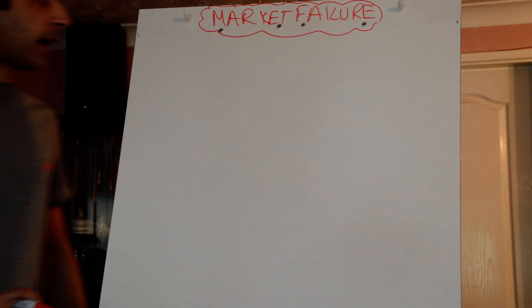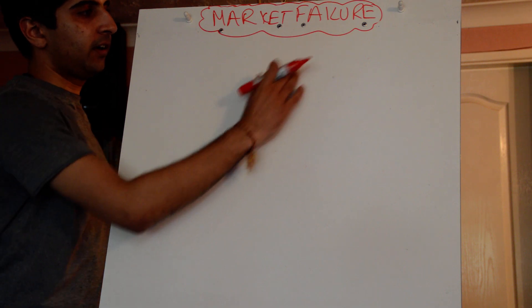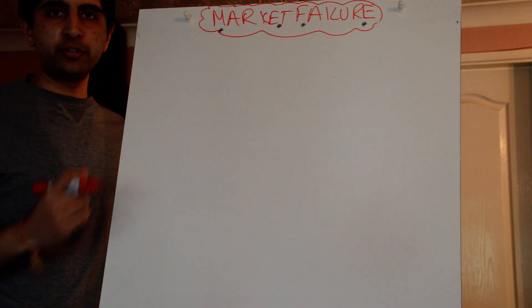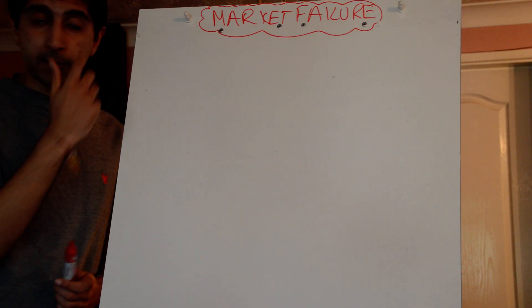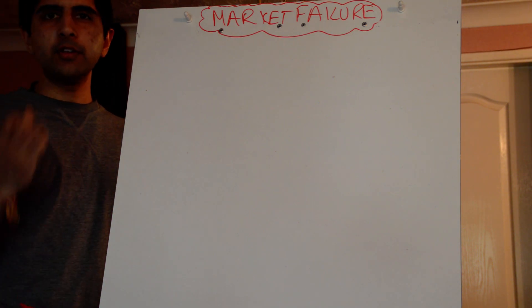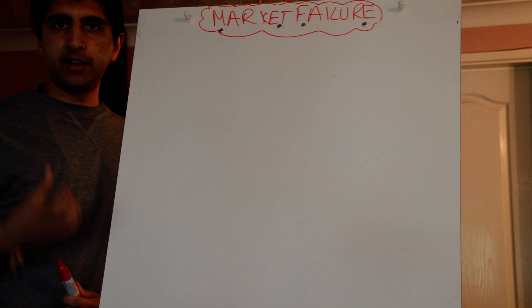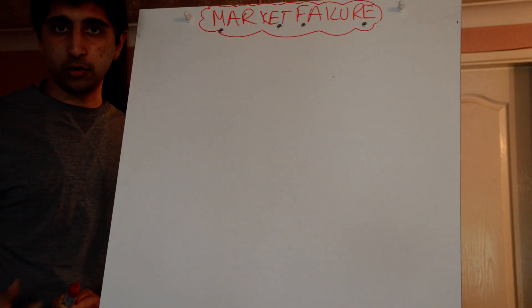Hey guys, last thing we want to talk about is market failure with merit goods and positive externalities. This will cap off the section on market failure. Remember what merit goods are - they tend to be under-provided and under-consumed in the free market economy.